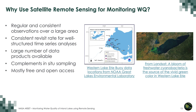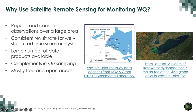That brings us to the reason why we use satellite remote sensing for monitoring water quality. Satellite data provide regular and consistent observations over a large area. For example, in the western part of Lake Erie, buoy data collected by NOAA are point measurements that don't cover the entire lake. In contrast, a Landsat satellite image shows the continuous distribution of cyanobacteria or algae in the western part of the lake, which would be hard to see from point measurements.